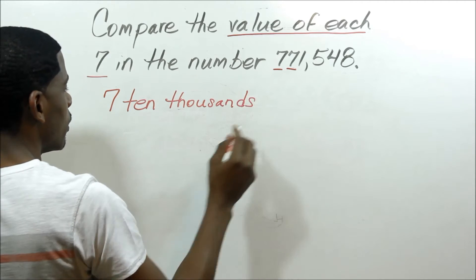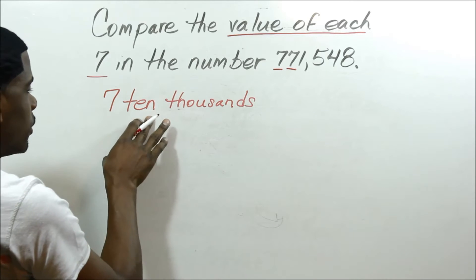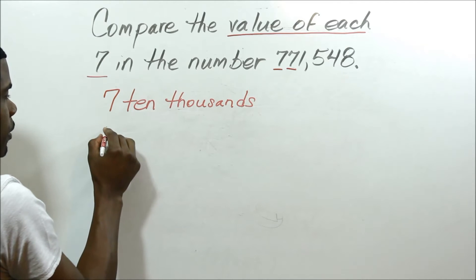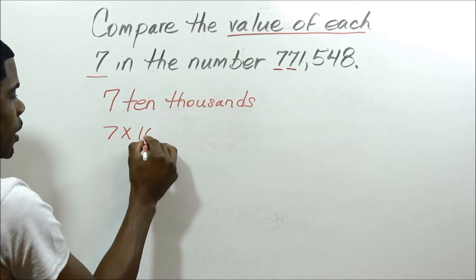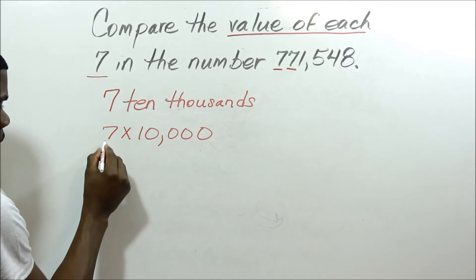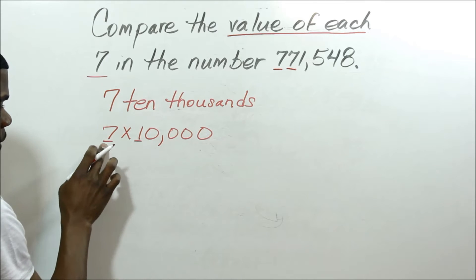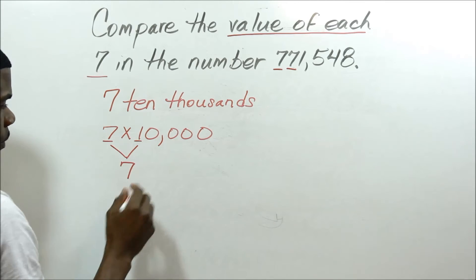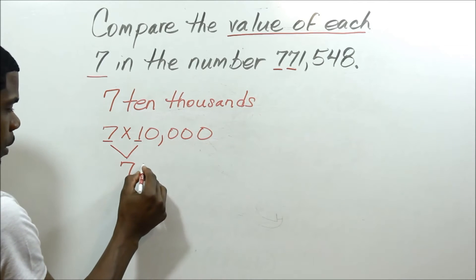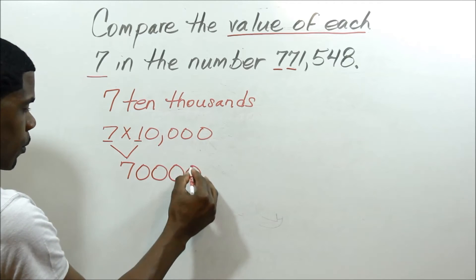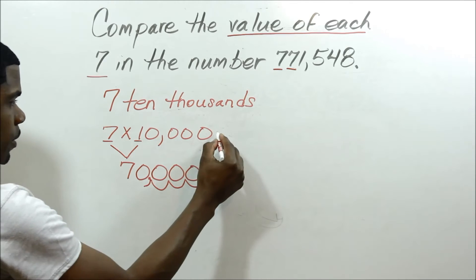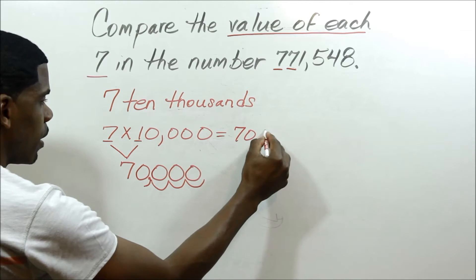So what I would do is say: 7 ten-thousands. The best way to approach this is to look at the 7 and the 1. I say 7 times 10,000 — so 7 times 1 is 7. I count my total zeros: 1, 2, 3, 4. And I just plug that in with my 7 — 1, 2, 3, 4 — and move my decimal over to find where I put my comma. And that would be 70,000.